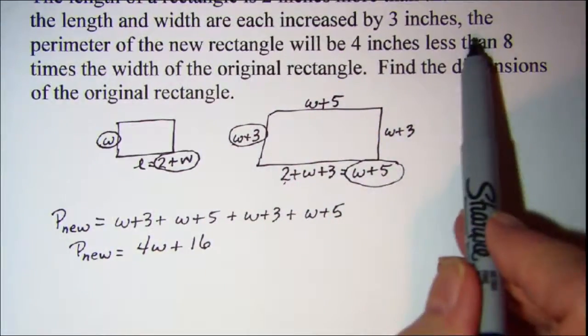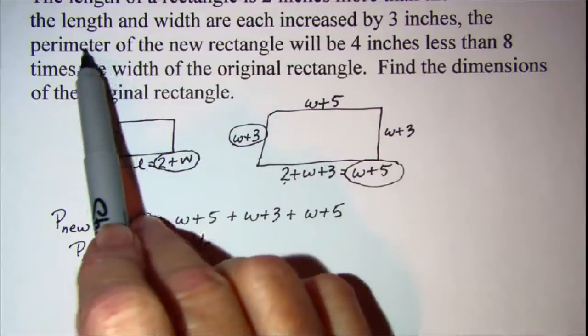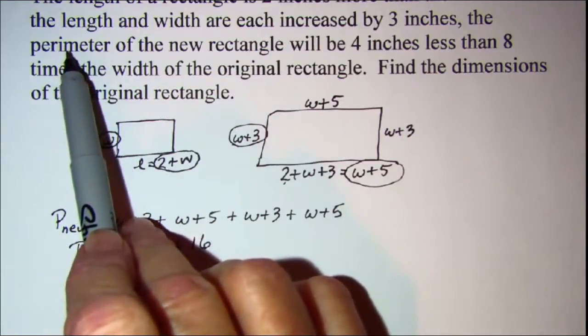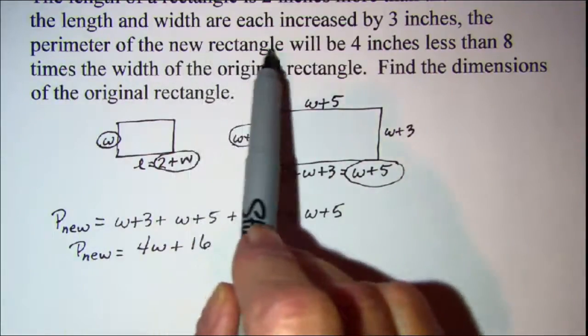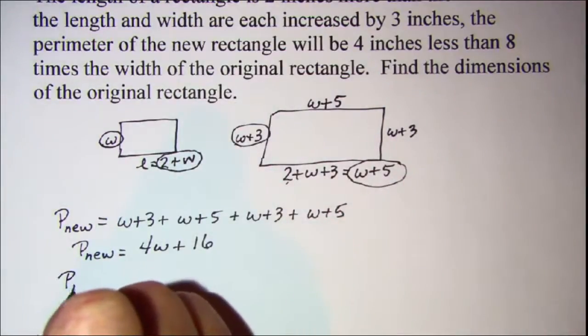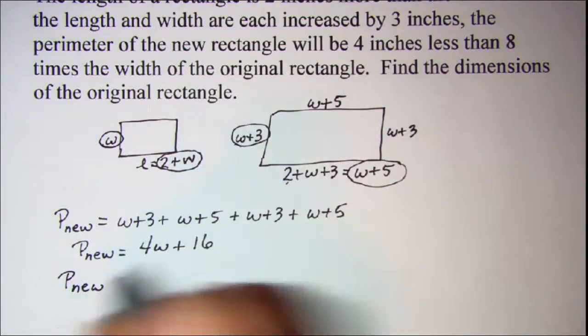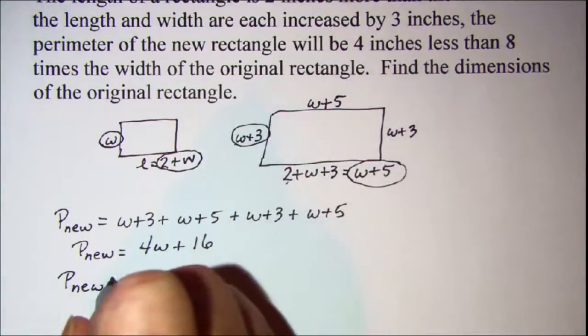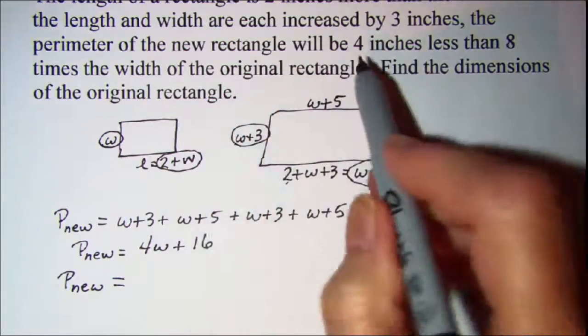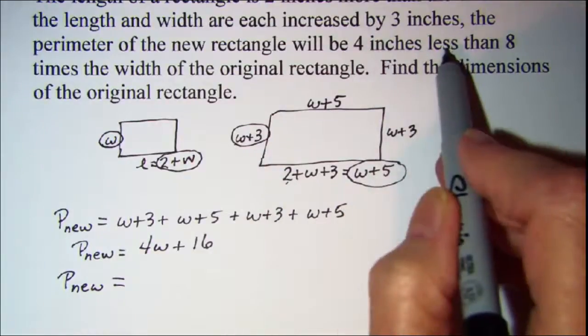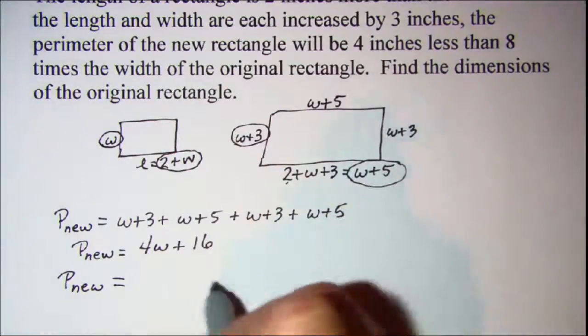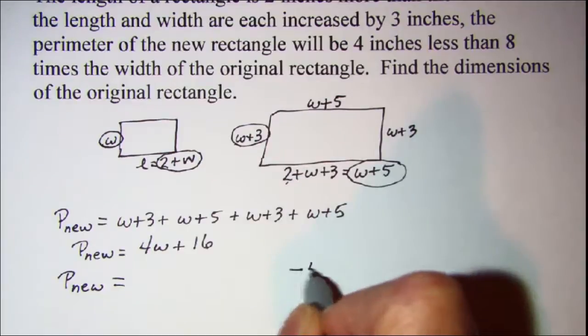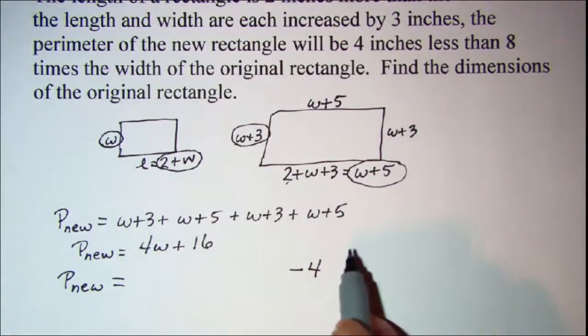Then let's go ahead and do this again and get our equation. The perimeter of the new rectangle, which is P sub new, will be—so that's where our verb is—equals 4 inches less than. So I have to scoot over and put minus 4 because I'm going to subtract 4 from something.